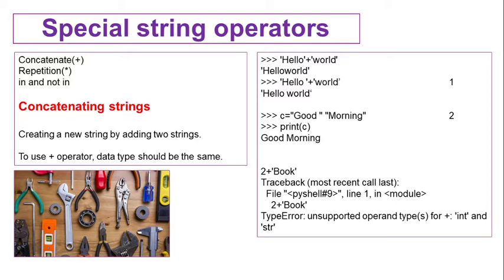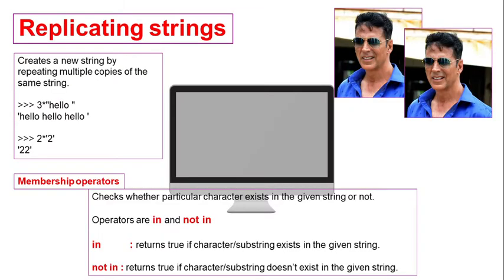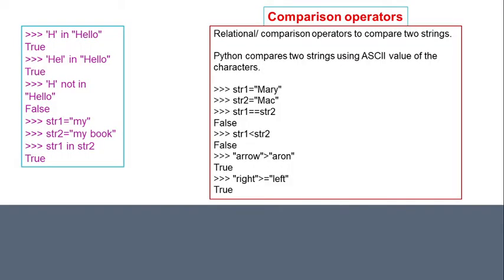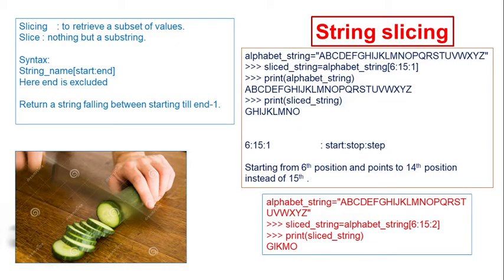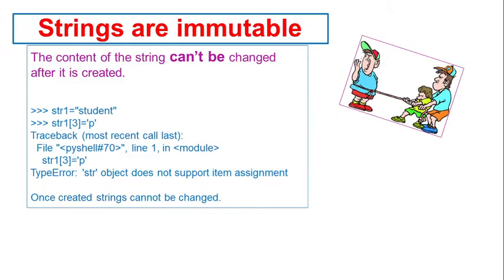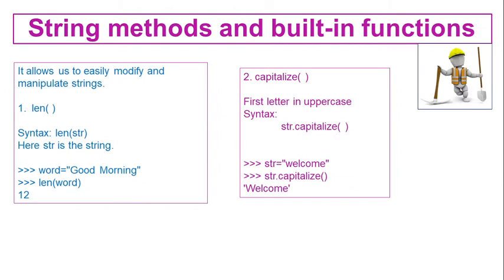Hi, dear students. Welcome back to computer science class. In our previous session, we learnt special string operators like concatenation operator plus, repetition operator asterisk, and in/not-in membership operators. Then replication, comparison operators like equal to, greater than, less than, greater than or equal to, less than or equal to. Then string slicing, getting sub-strings, and strings are immutable — cannot be changed.